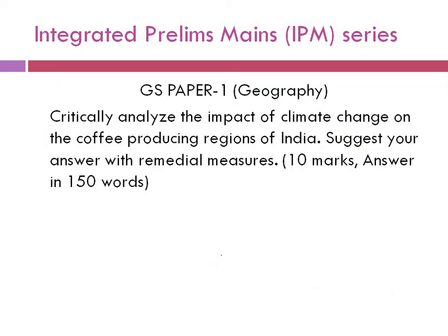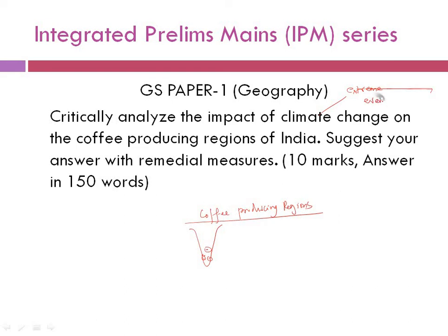Today's mains answer writing practice question: Critically analyze the impact of climatic change on the coffee producing regions of India and suggest remedial measures. This is a 10-mark answer in 150 words. This came from today's Hindu newspaper open-page article discussing negative impacts of climate change on coffee. Coffee is majorly produced in Karnataka, Tamil Nadu, and Kerala. Extreme floods and droughts in recent years — like Karnataka's flooding this year — are causing pest attacks, crop disease, and reduced coffee output, harming the industry.